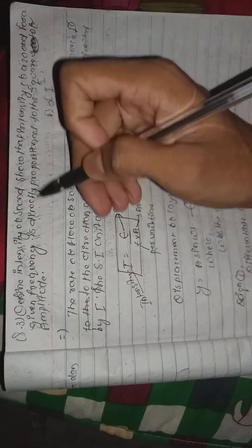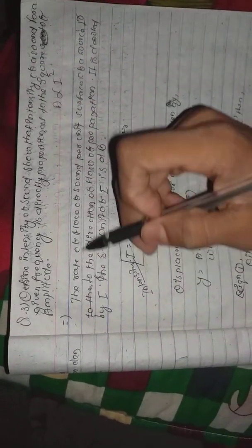I am going to define the intensity of sound. The intensity of a sound for a given frequency is directly proportional to the square of amplitude. Let me define the intensity of sound: it is the rate of flow of sound per unit area of a surface perpendicular to the direction of flow of propagation.